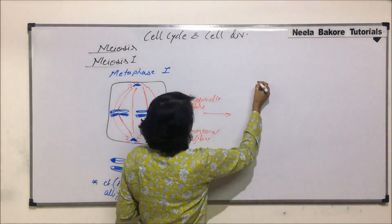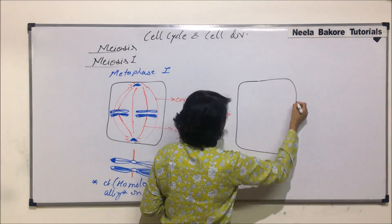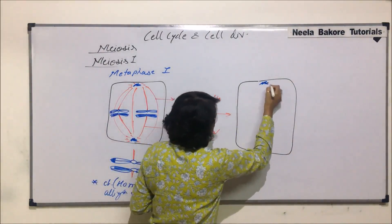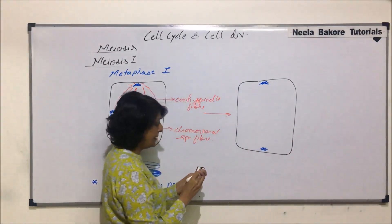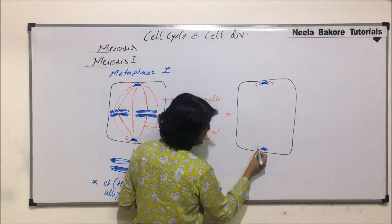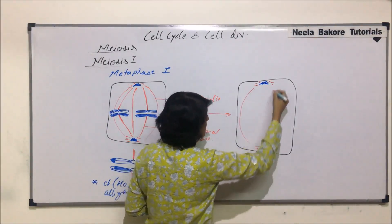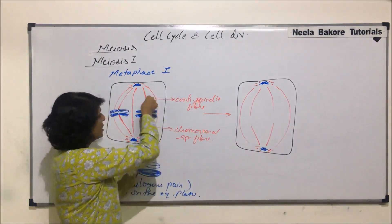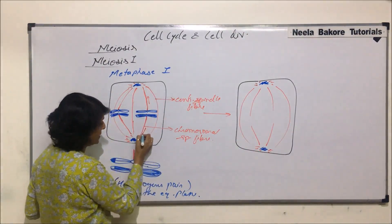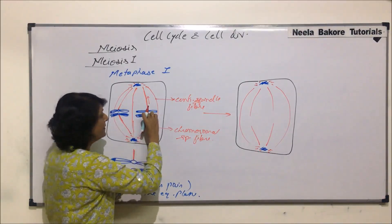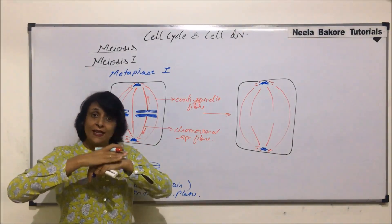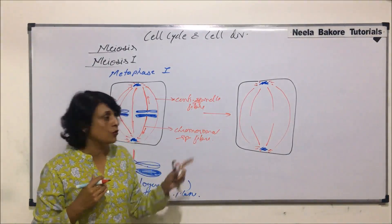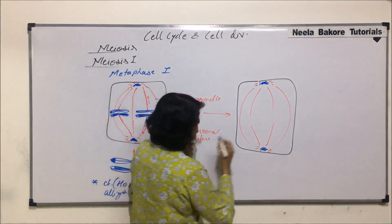Let us draw a cell which is in anaphase 1. In anaphase, the spindle fibers start to contract. Here we draw the two centrioles, the asters with smaller fibers, and the spindle fibers — some continuous fibers and the ones attached to chromosomes. When the chromosomal fibers contract, one moves towards one pole and the other toward the opposite pole. The chromosome pair separates — one chromosome goes toward one pole and the other toward the other pole. Let us show this chromosome moving.